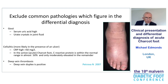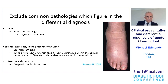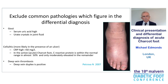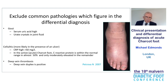Looking at cystic changes and erosions makes you think of other common pathologies in the differential diagnosis. Is it gout? The serum uric acid will be high and urate crystals would be present in the joint fluid. Are you missing cellulitis? Cellulitis is more likely in the presence of an ulcer, and the CRP is usually greater than 50; in acute Charcot the C-reactive protein is within normal range in almost 50% and only moderately elevated in the remainder. There's a lot of edema in Charcot — be careful not to mistake it for deep vein thrombosis; if uncertain, duplex imaging will give confirmation or otherwise.